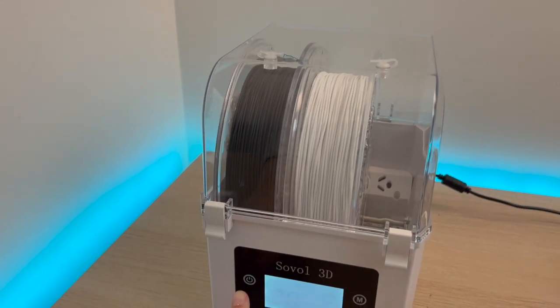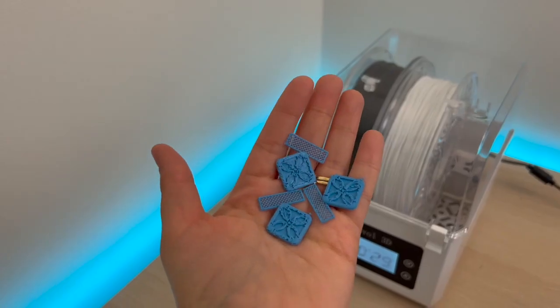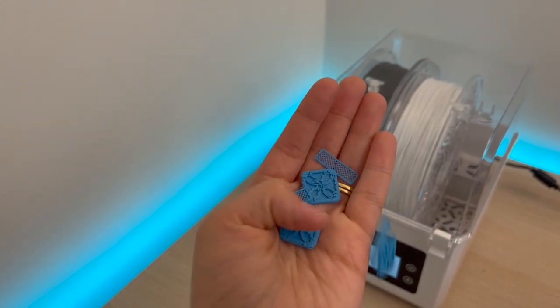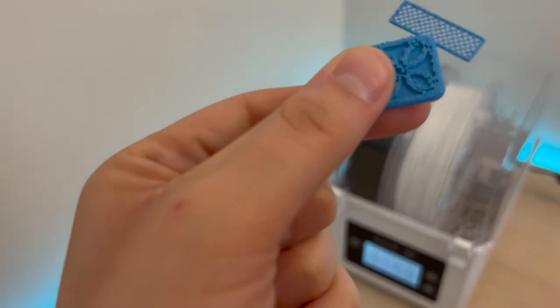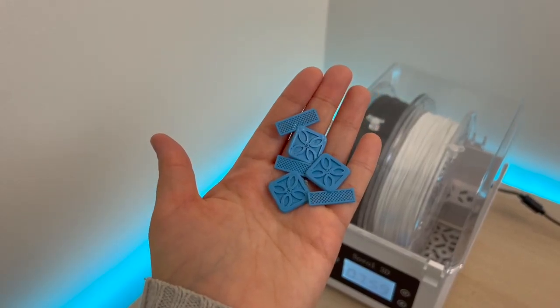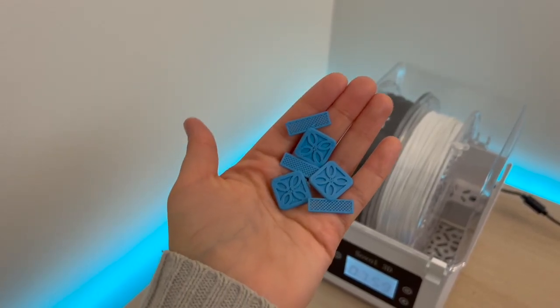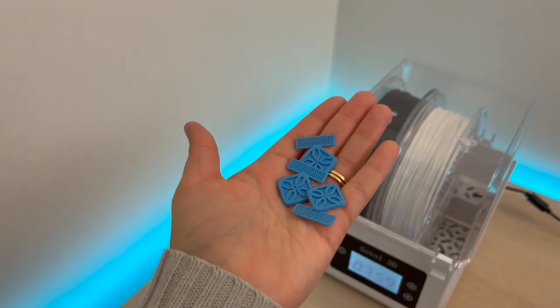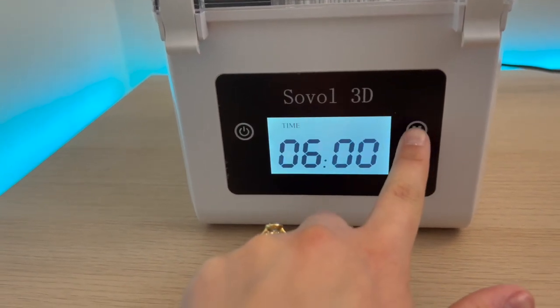Sovel also sent me their filament dryer, which works wonders. Here's a quick example of some TPU prints that came out before and after using their filament dryer, and no print settings were actually altered between these prints. I just used the filament dryer for about 9 to 10 hours on the spool and it just ended up giving me better results.